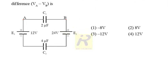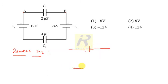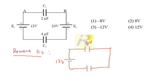To get the potential difference across this capacitor, we follow one method: first, simply remove battery E2. So when I remove E2, the same circuit will appear with no battery E2 — only E1, which is 12 volts. And we have this capacitor of 2 microfarad and this one of 4 microfarad.